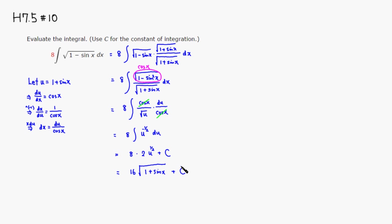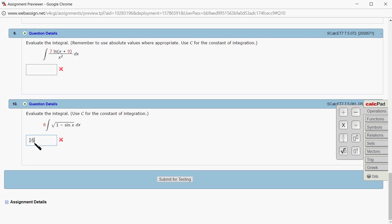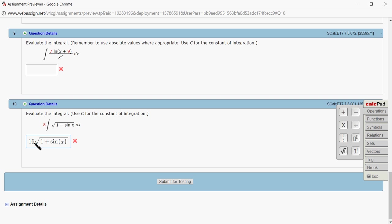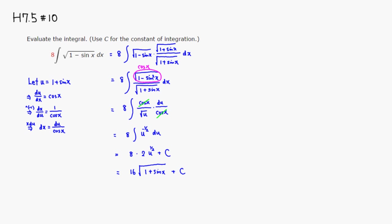Let's type it in. So we got 16 and square root of 1 plus sine of x, and then plus some constant c. Submit for testing. It came back and looks like we got this one correctly. That's it. I hope that this was clear.